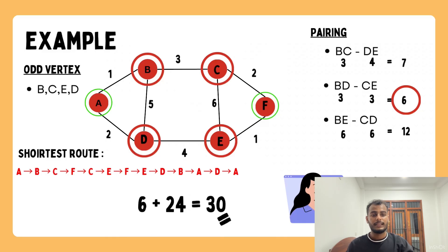The Chinese postman problem is used in real-world applications like postal delivery, garbage collection, and road maintenance, where a route must be planned to cover all streets efficiently. By duplicating the shortest edges between odd-degree vertices, we minimize the extra distance traveled while ensuring all streets are covered.